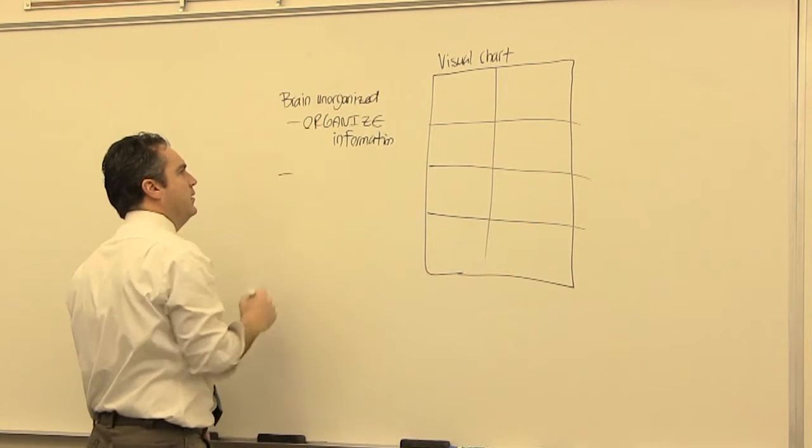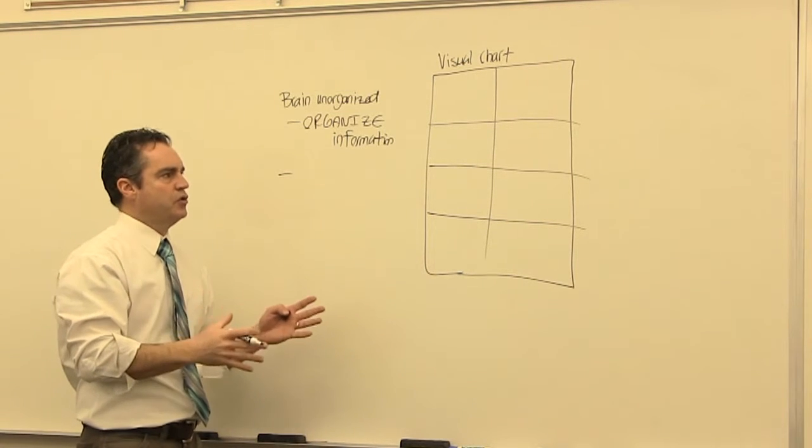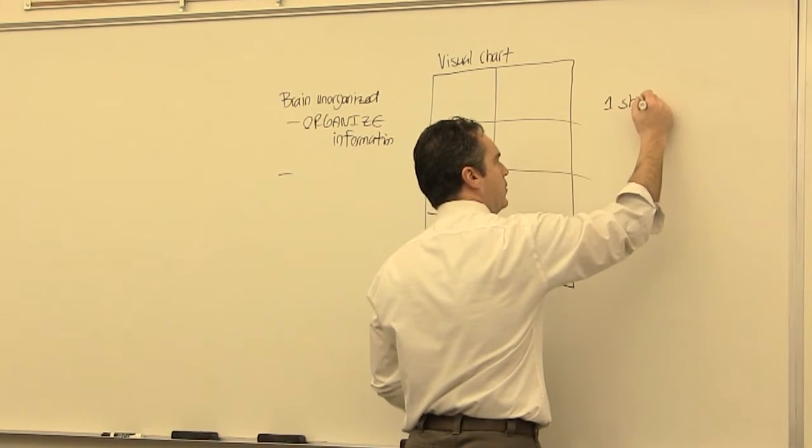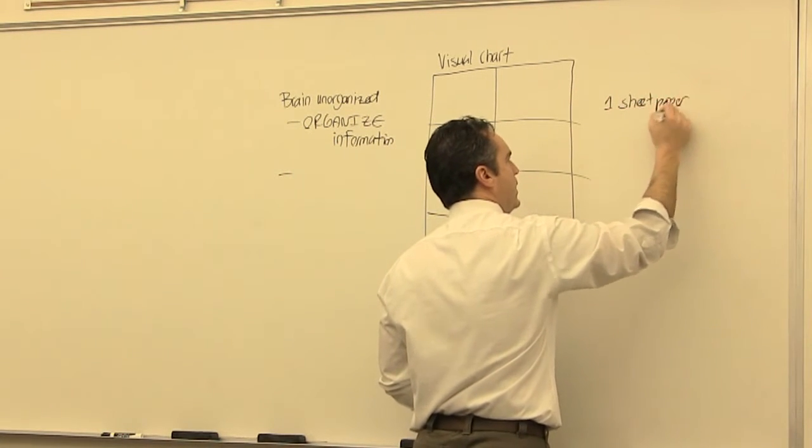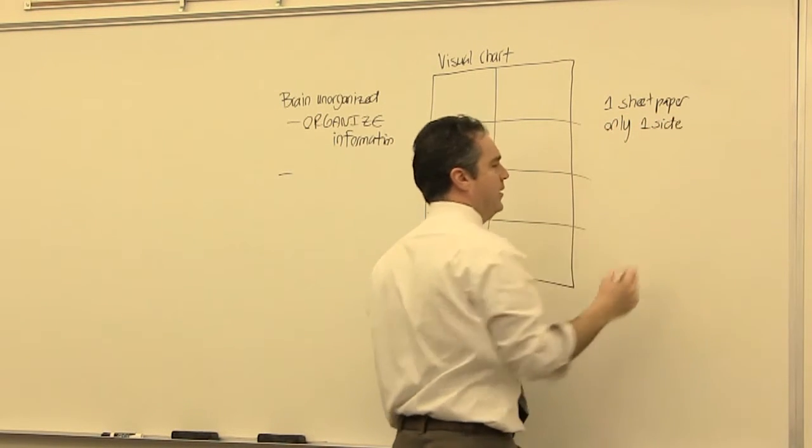The next thing that's so critical is why the visual chart is only to be done on one sheet of paper and why it should only be done on one side of that paper.